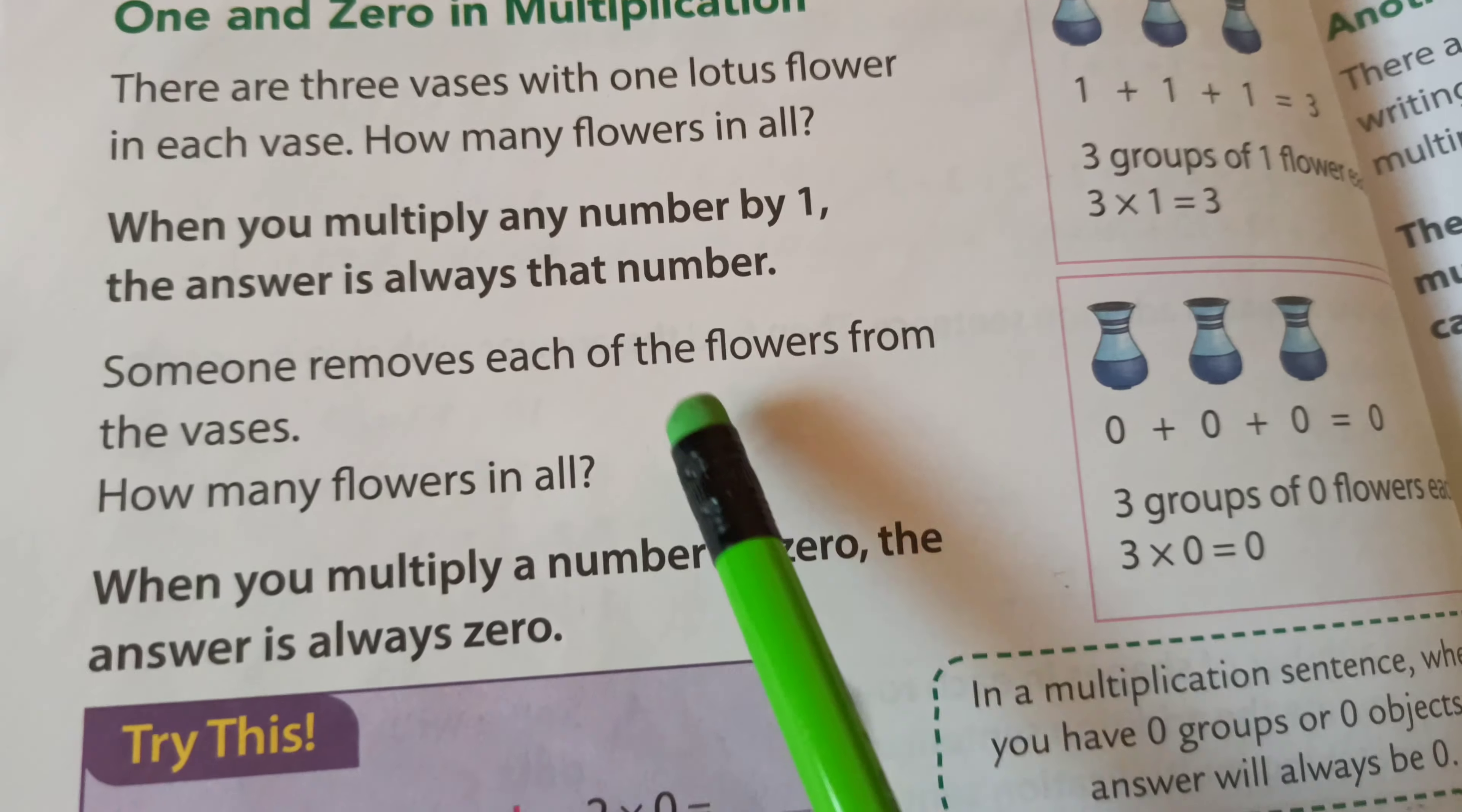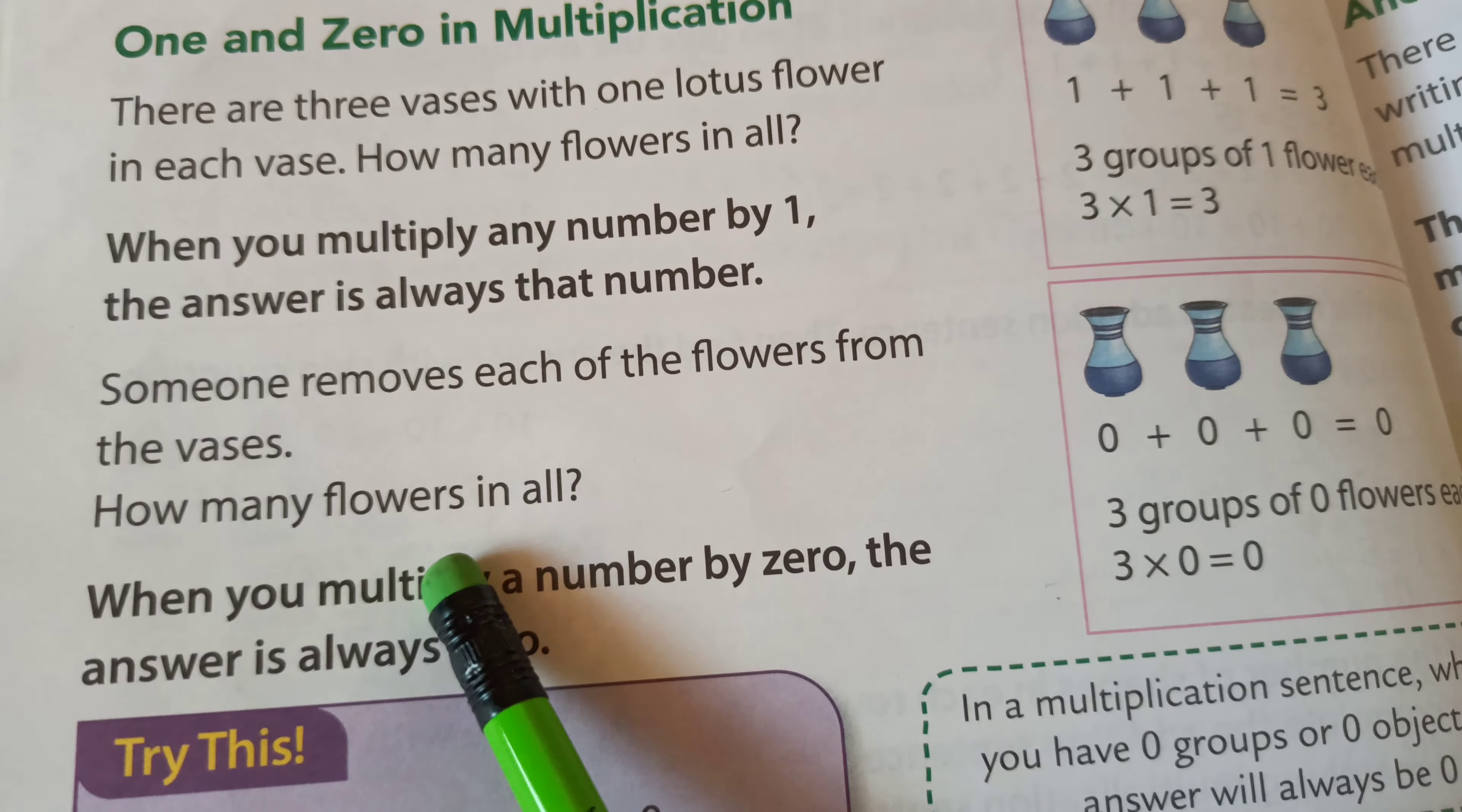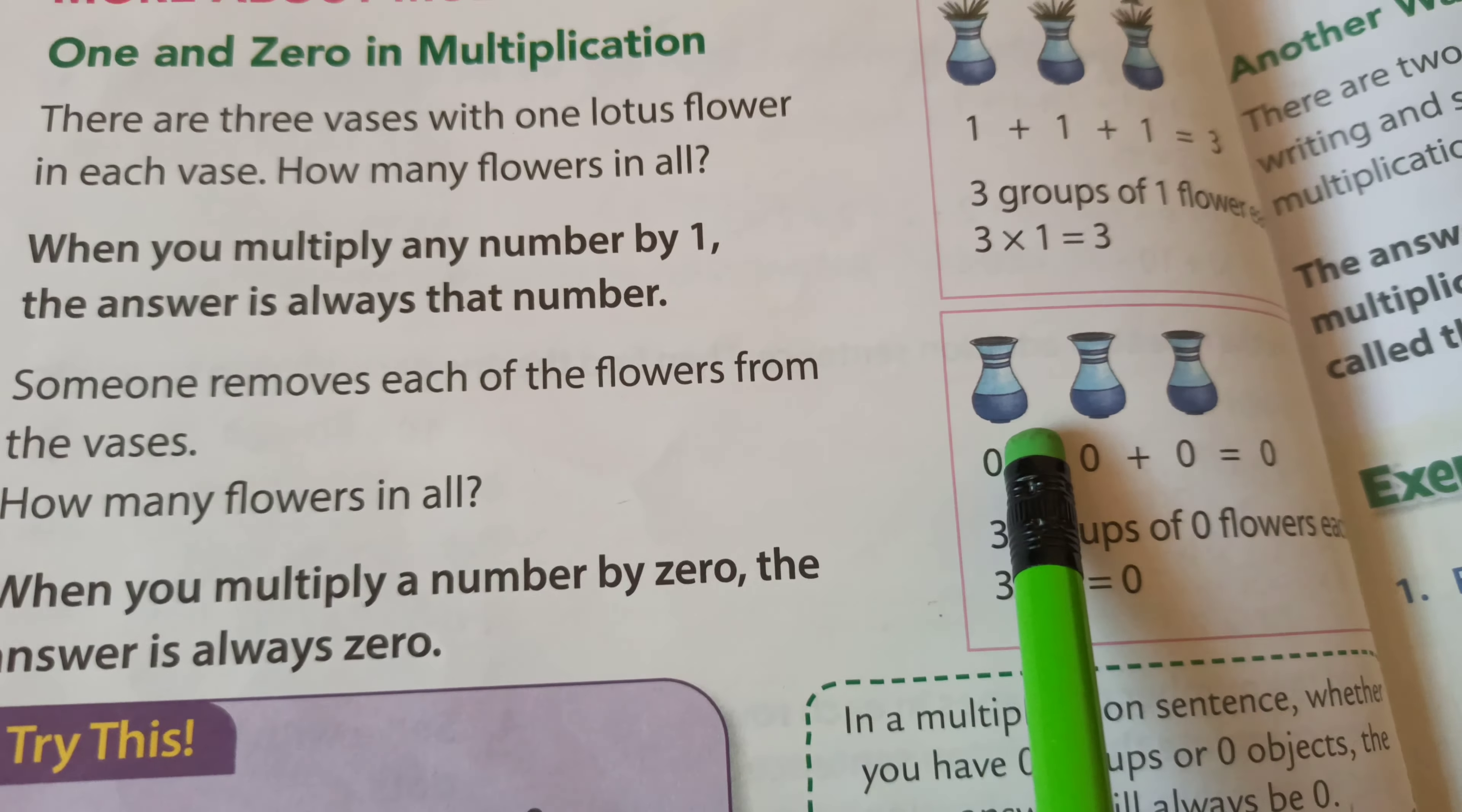For example, 3 ones are 3, 4 ones are 4, 5 ones are 5. Someone removes each of the flowers from the vases.